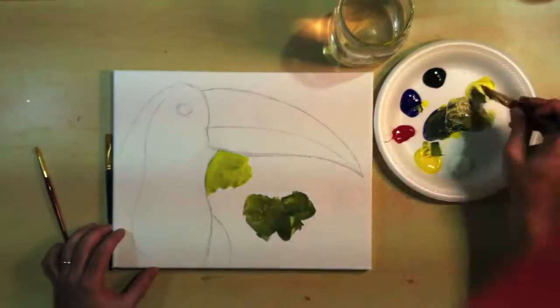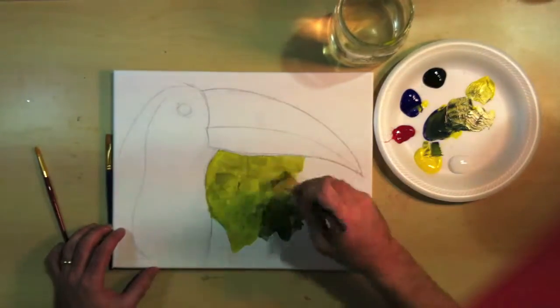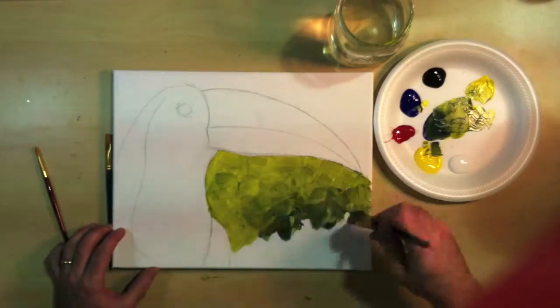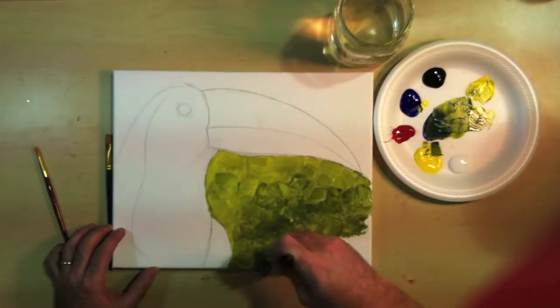First we're going to go ahead and start with the background. I'm going to lay down a light green and transition it into a darker green as I head into the corners here.